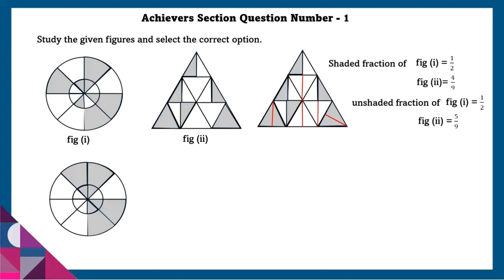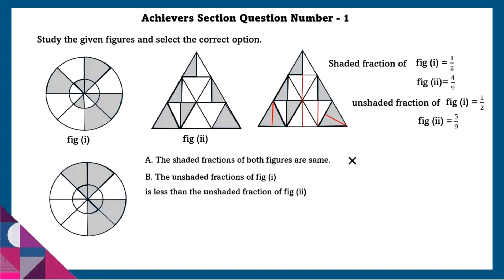Now using this information, we can select the correct option. Option A: the shaded fraction of both figures are the same — this is wrong because the shaded fraction of figure 1 is 1 by 2 and figure 2 is 4 by 9, so these two are not the same. Option B: the unshaded fraction of figure 1 is less than the unshaded fraction of figure 2 — the unshaded fraction of figure 1 is 1 by 2 and figure 2 is 5 by 9.